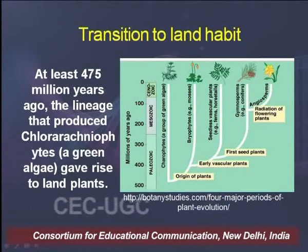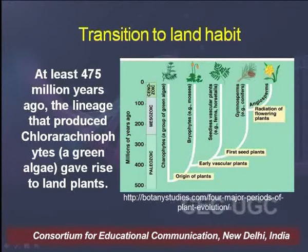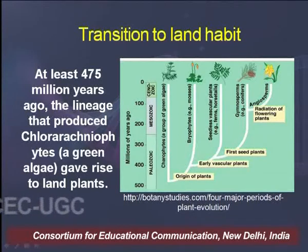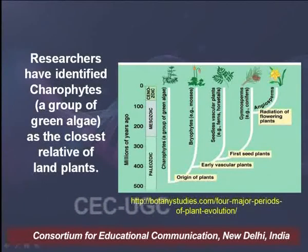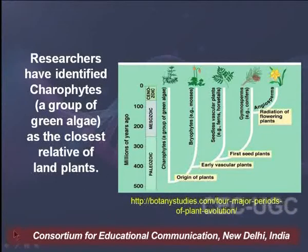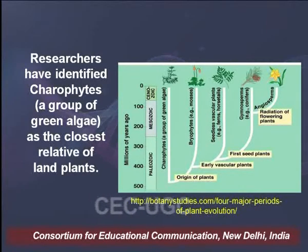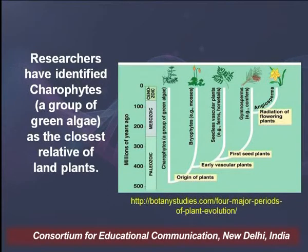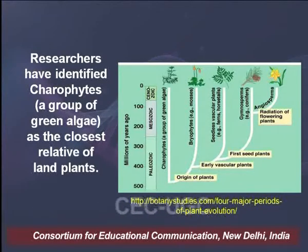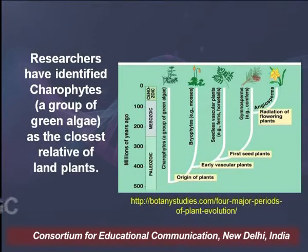The lineage that produced were chloroacneophytes, a type of green alga which gave rise to land plants. Researchers have identified carophytes, a group of green alga, as the closest relative to land plants. In this cladogram you can very easily see that from carophytes the origin of land plants has taken place — first the early vascular plants arose, followed by first seed plants and then flowering plants.